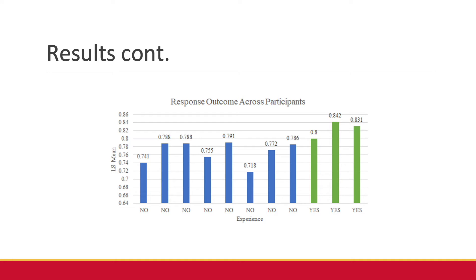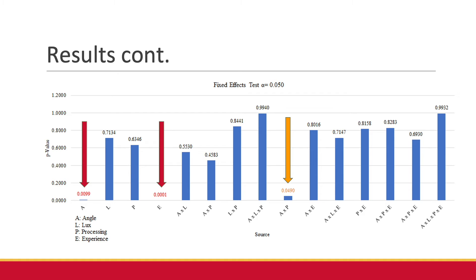Experienced users had a higher detectability rate versus non-experienced users. In our 4-factorial analysis, you can see the significance between the difference in groups. The most significant factor was experience level — there is a difference between experienced and non-experienced users. The lighting angle was the next significant difference. The last factor that could start to trend but not quite reach significance was lighting angle times processing type. This was all with an alpha level of 0.05.